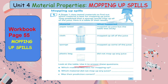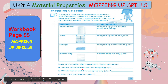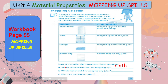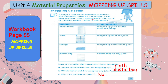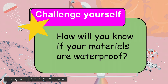Look at the table and let's answer these questions. For letter A, which material was best for mopping up? It's the cloth, because it mopped up all of the juice. For letter B, which material did not mop up any juice? That is the plastic bag — because plastic is waterproof. For letter C, was their prediction correct? The answer is no, because they predicted that a sponge would mop up all of the juice, only to find out that the sponge mopped up only some of the juice. After completing this worksheet, what did you find out about materials that are waterproof?